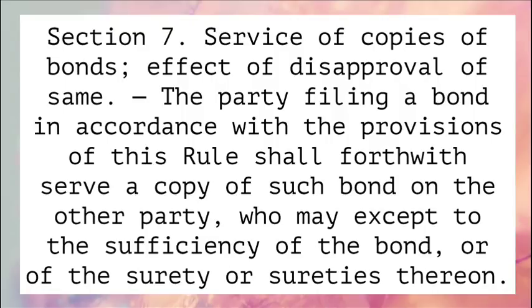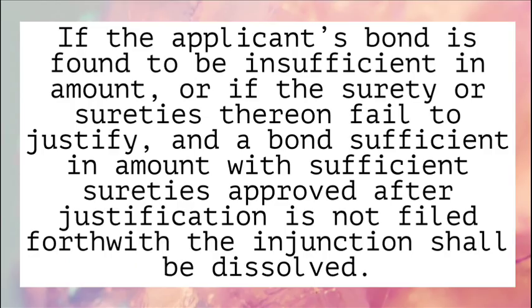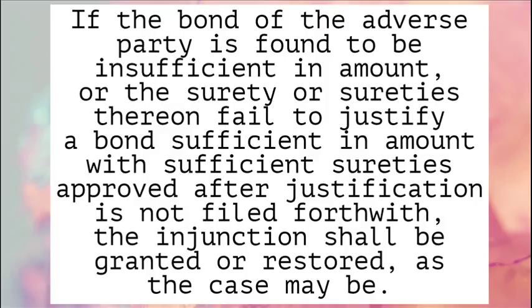Section 7. Service of Copies of Bonds; Effect of Disapproval of Same. The party filing a bond in accordance with the provisions of this rule shall forthwith serve a copy of such bond on the other party, who may object to the sufficiency of the bond or of the surety or sureties thereon. If the applicant's bond is found to be insufficient in amount, or if the surety or sureties thereon fail to justify, and a bond sufficient in amount with sufficient sureties approved after justification is not filed forthwith, the injunction shall be dissolved. If the bond of the adverse party is found to be insufficient in amount, or the surety or sureties thereon fail to justify, and a bond sufficient in amount with sufficient sureties approved after justification is not filed forthwith, the injunction shall be granted or restored, as the case may be.